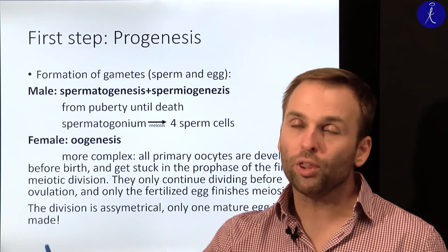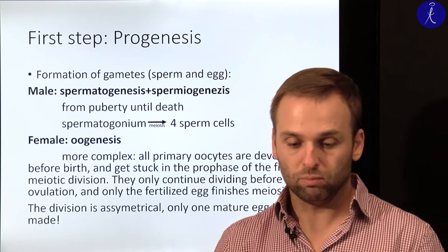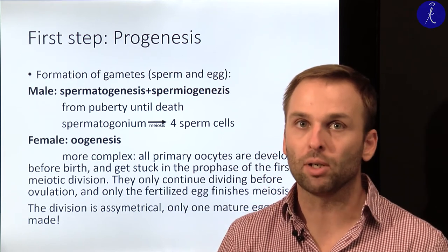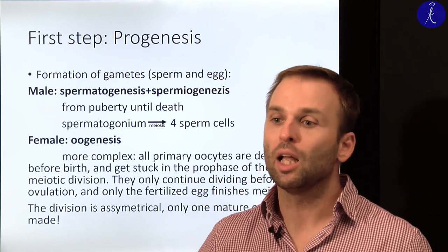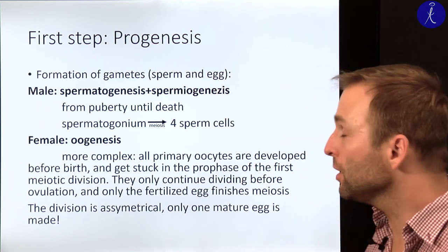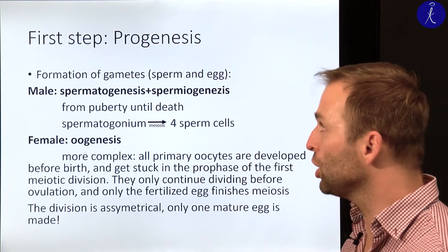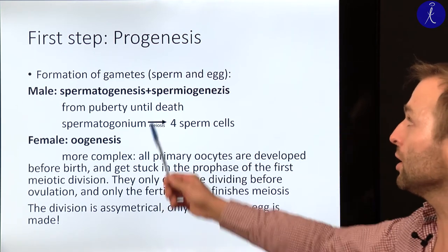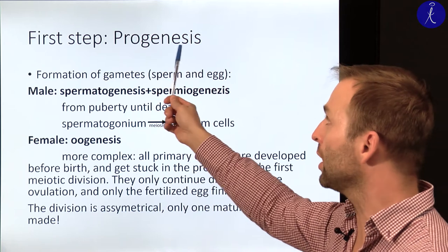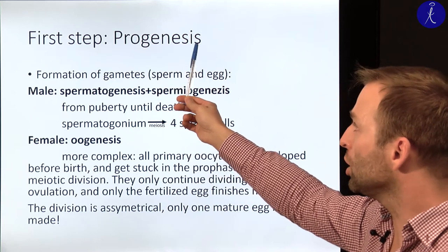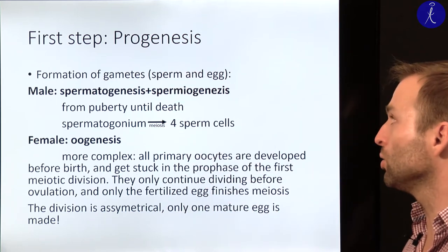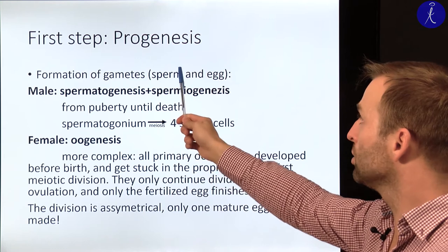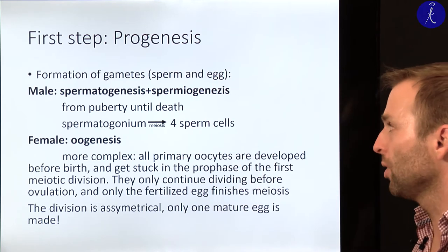Let's go through the first major phase, embryogenesis, in more detail. The first step — even before development starts — is progenesis, which is the formation of the so-called gametes: sperm and egg cells.